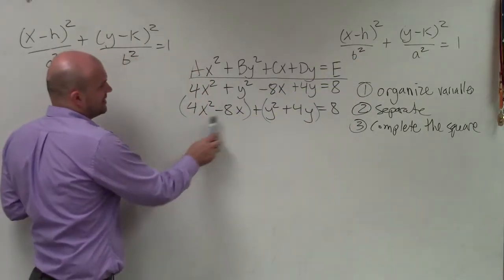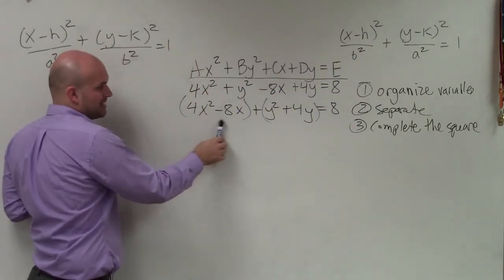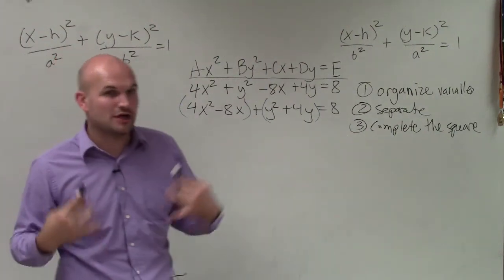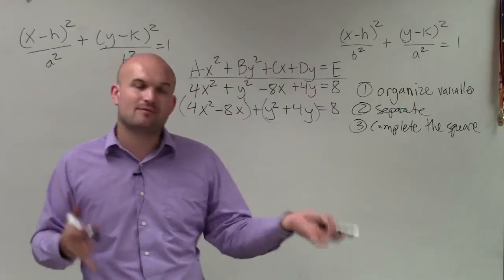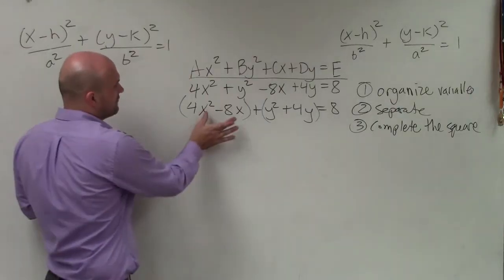So you can see here, this isn't a trinomial yet. I don't know my value of c, so I have to create a value of c that's going to create a perfect square trinomial that I can rewrite as a binomial squared.